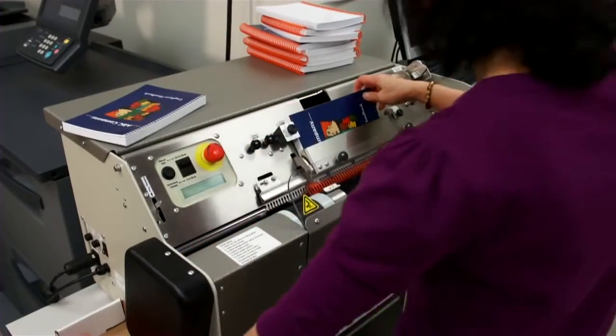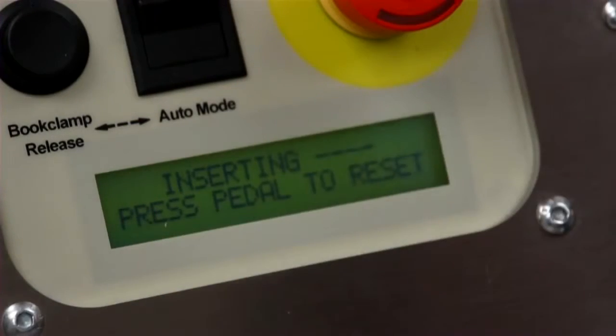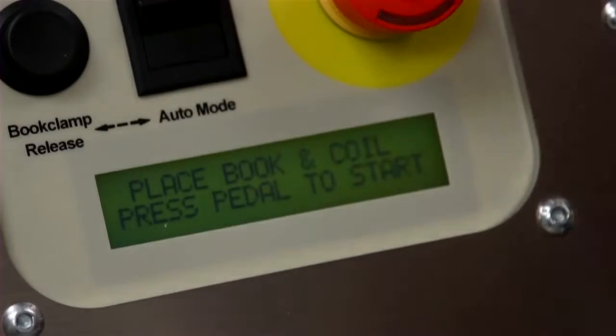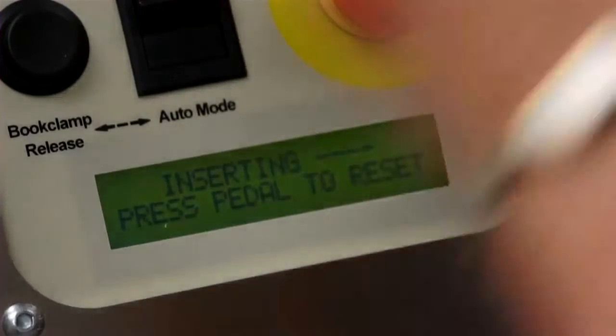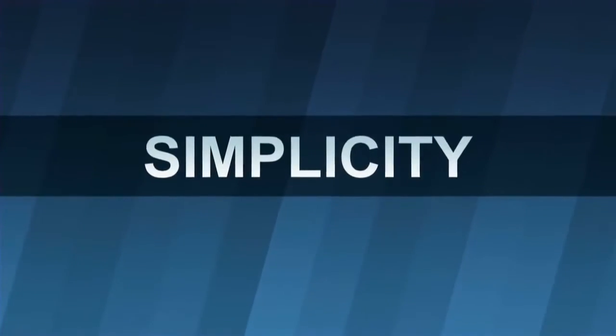The Coilmatic has an LCD screen that guides the operator through the machine setup and operation. The LCD screen communicates the machine status at all times. Let's show you just how easy it is.